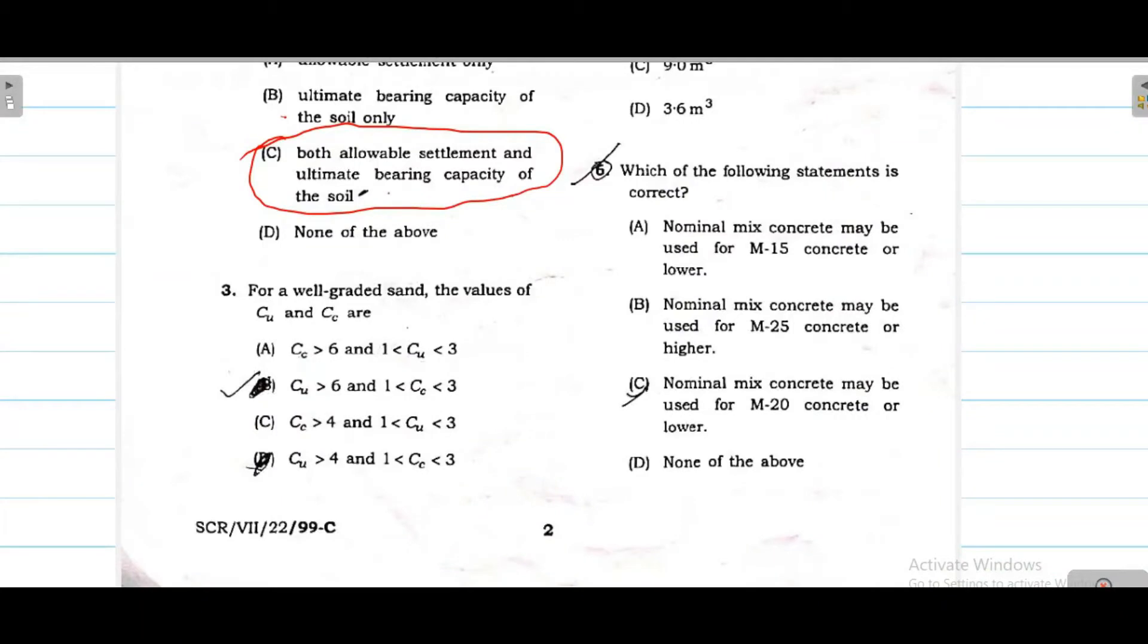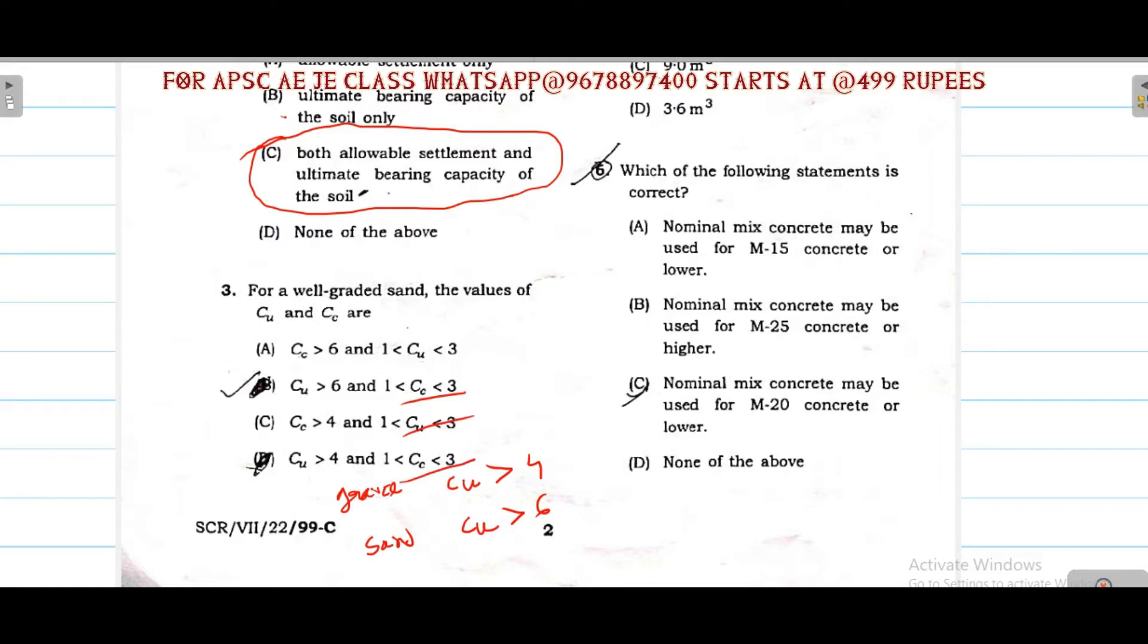Next question is for a well-graded sand, the values of Cu and Cc. This can cause confusion. Well-graded sand, the Cu that is coefficient of uniformity should be greater than 6. For well-graded gravel, Cu should be greater than 4. And sand, Cu should be greater than 6. And the coefficient of curvature CC value should be 1 to 3, in this range. So the correct answer will be option number B - coefficient of uniformity is greater than 6 and the value of Cc is in the range of 1 to 3.